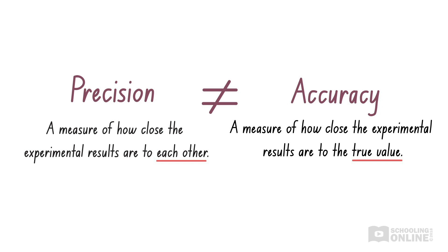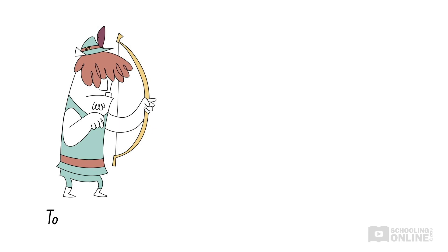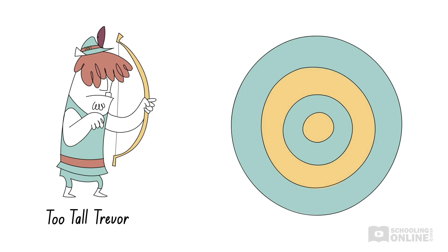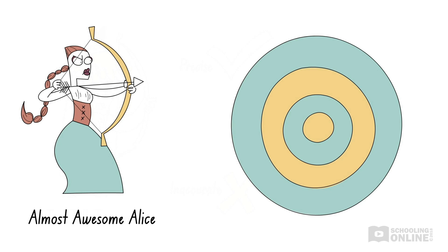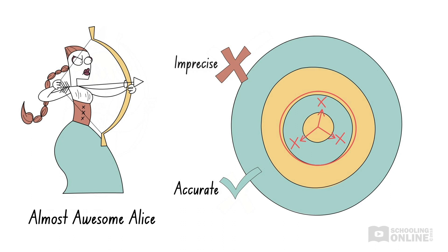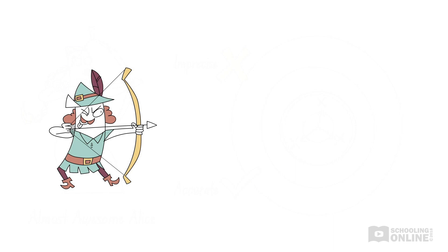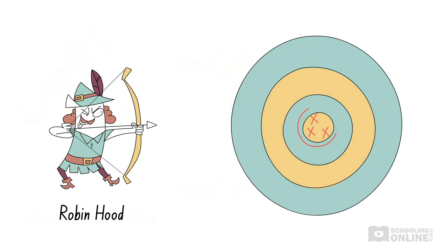Even if experimental results are accurate, they might not be precise. Let's return to Too Tall Trevor from our previous video on accuracy. Too Tall Trevor is an inaccurate archer because his arrows always land above the bullseye. However, his shots are very precise because all the arrows land close to each other. His sister, Almost Awesome Alice, faces a different dilemma — she is quite accurate as her arrows often land near the bullseye, but her arrows are spread out, so she is less precise than Too Tall Trevor. Neither sibling can compare to Robin Hood, whose arrows always hit the bullseye and land close together. Therefore, Robin Hood is both an accurate and precise archer.